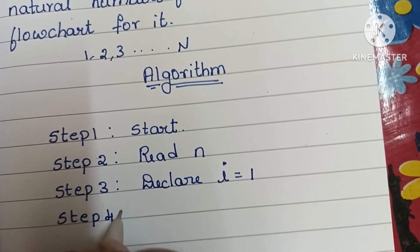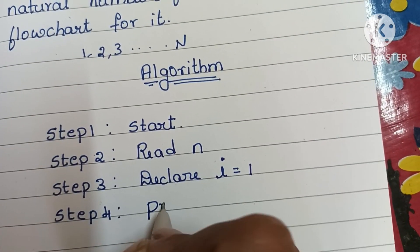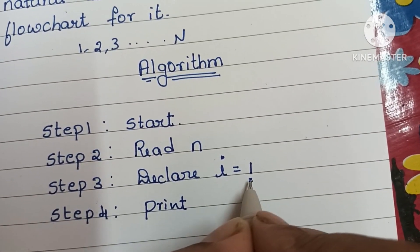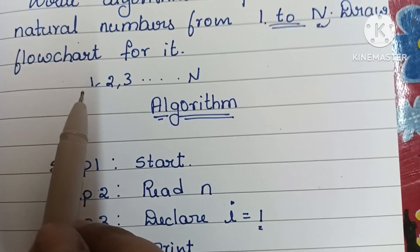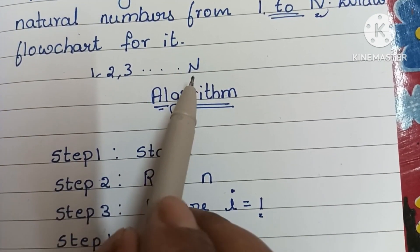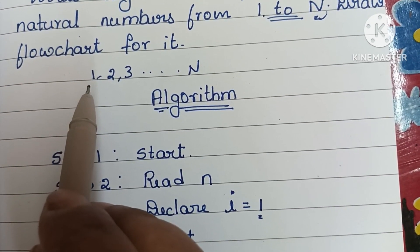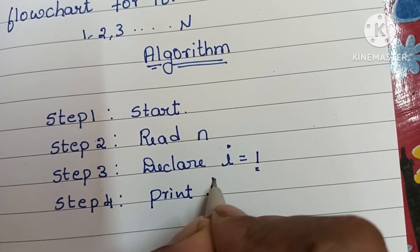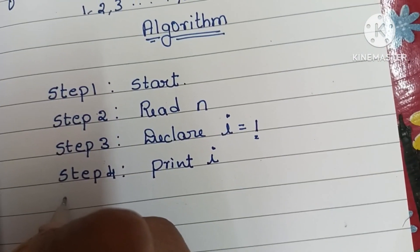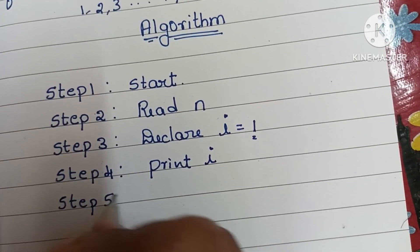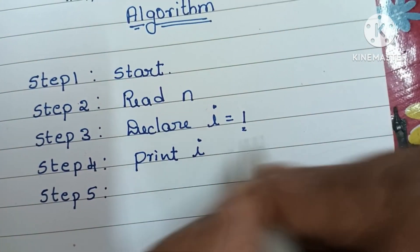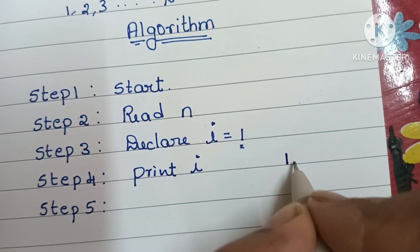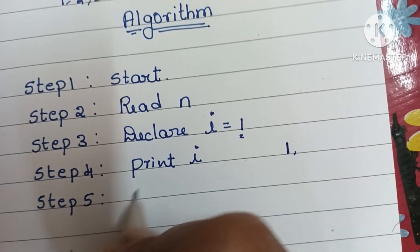In step four, we have to print the value of i. We need to print all natural numbers from 1 to N, so initially we print the value of i which is 1. So here: Print i.